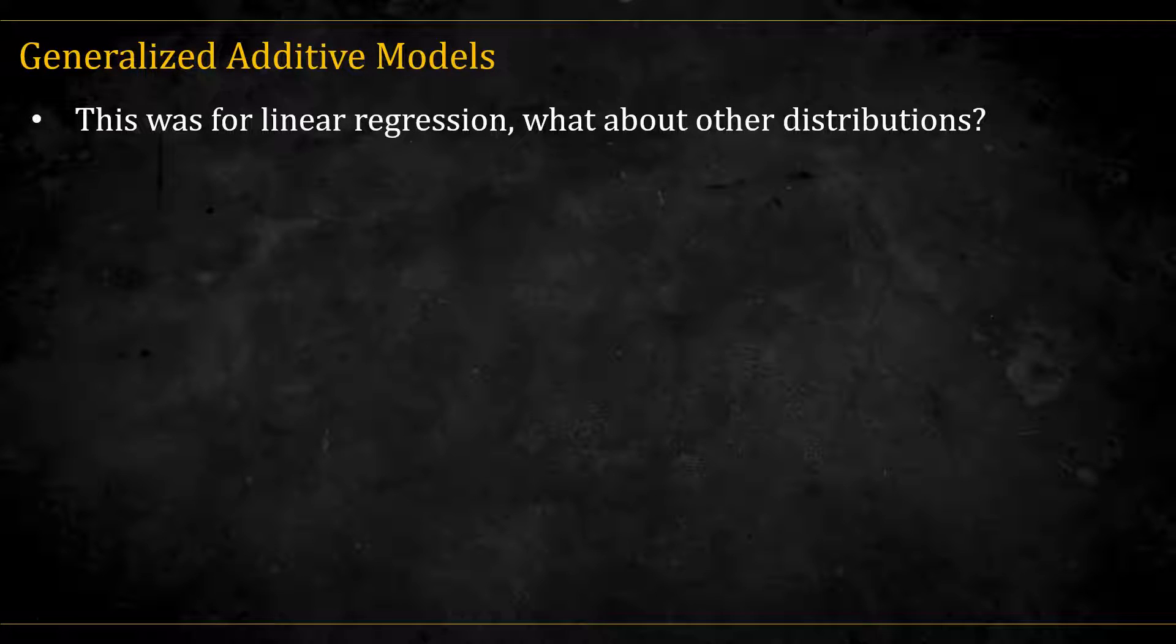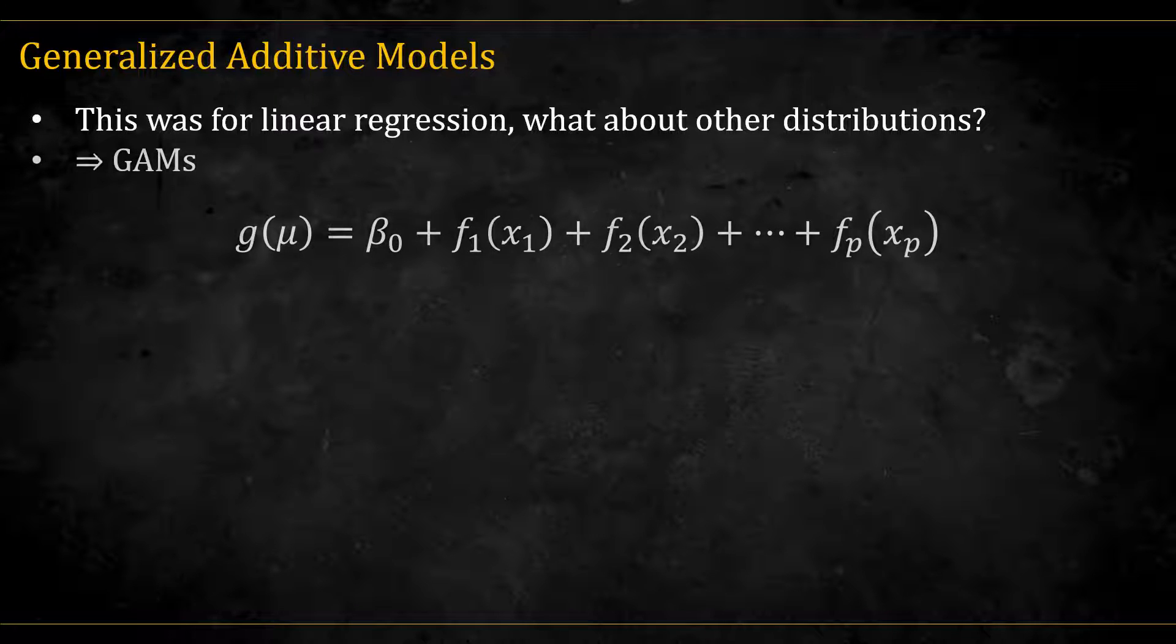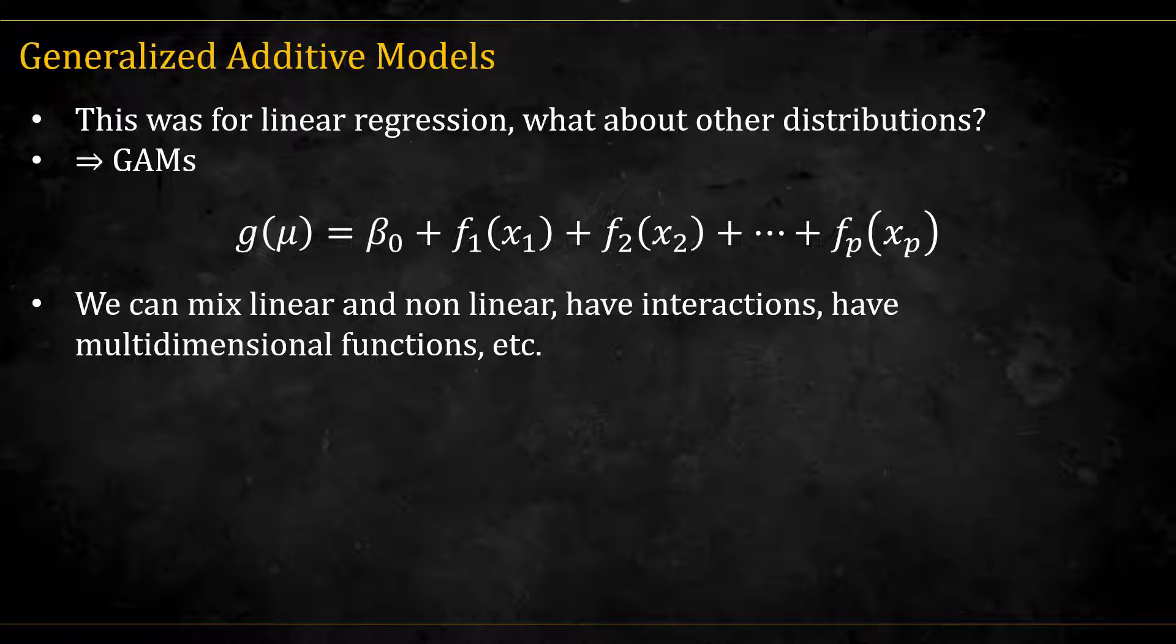This was for linear regression, but what if our y-data comes from other distributions, like binomial or Poisson? This is what GAMs do. The only conceptual difference is that now the smooth functions are on the link scale. Just like additive models, we can mix linear and non-linear terms, have interactions, etc.